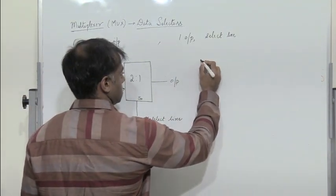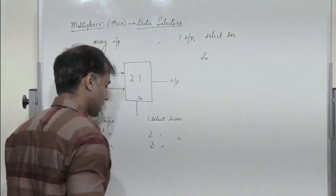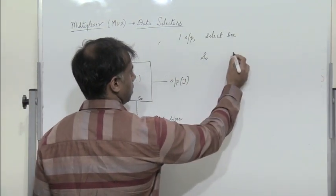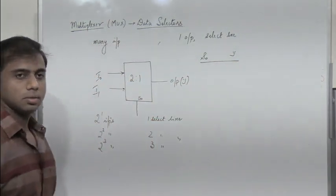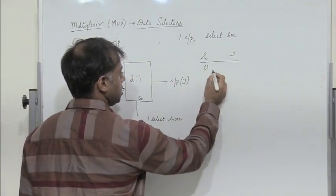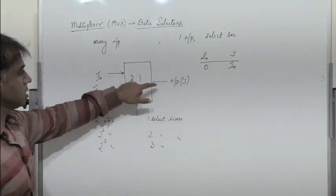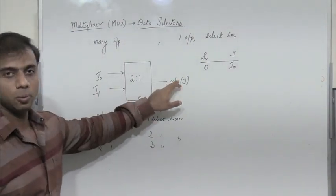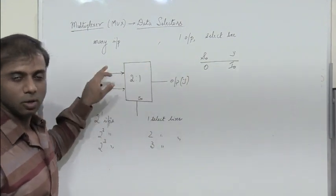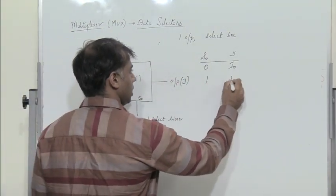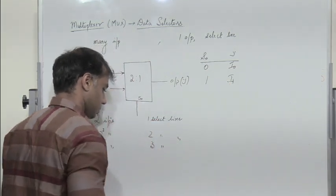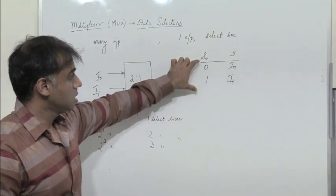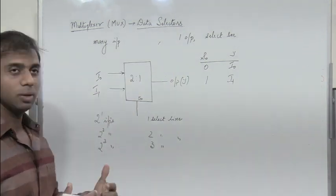The truth table has select line s0 and output y. When s0 is 0, I get i0 — so i0 is connected to the output. Whatever is present at i0 will appear at the output: if i0 is 0, I get 0; if i0 is 1, I get 1. When s0 is 1, I get i1. This is the truth table of a 2-to-1 mux.